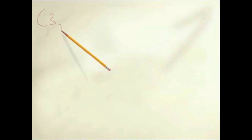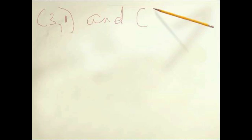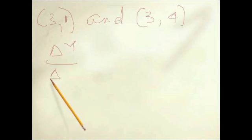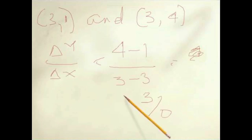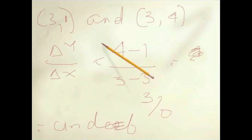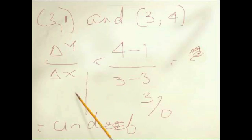Our last question is a tricky problem, as you'll see in a second. The points are (3, 1) and (3, 4). Using the same procedure, what you end up with is 4 minus 1 over 3 minus 3, which gives you 3 over 0, and you know anything divided by 0 is simply undefined. The line that is created is a vertical line, so there is no slope.